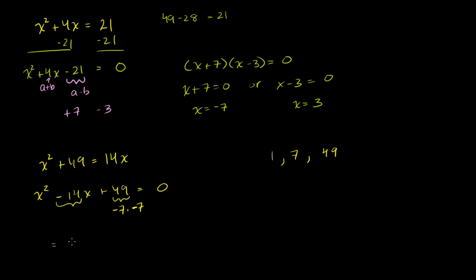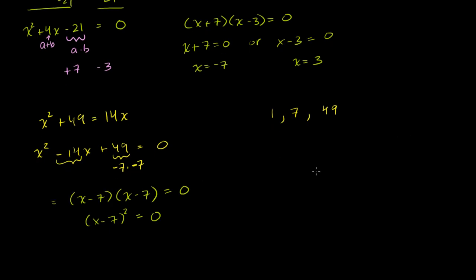So this factors as x minus 7 times x minus 7 equals 0, or x minus 7 squared equals 0. This was a perfect square of a binomial. Taking the square root of both sides gives x minus 7 equals 0, so adding 7 to both sides gives x equals 7 — only one solution.